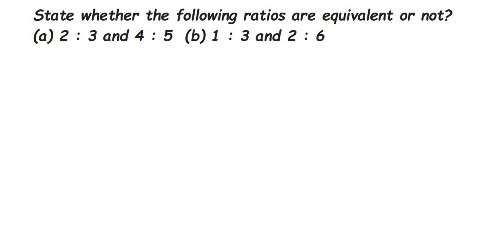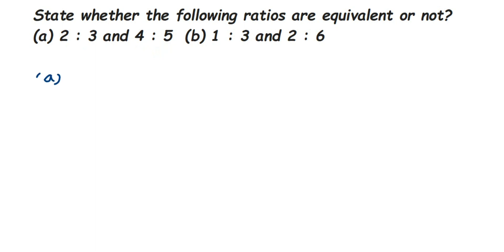Here we have a question on ratio. The question is: state whether the following ratios are equivalent or not. We have two questions. The first one is 2 is to 3 and 4 is to 5. Now there are two ways of solving this — one which is very simple, and the second one has four to five steps. The first method is useful when we have MCQ type or fill-in-the-blank questions.